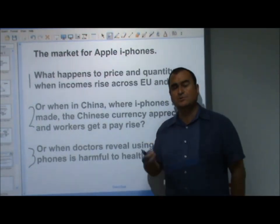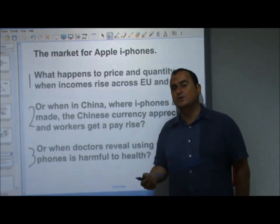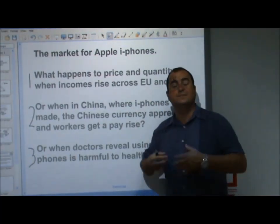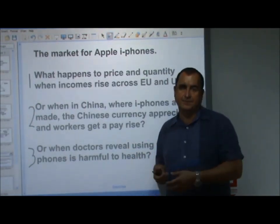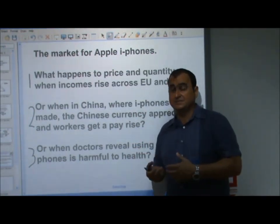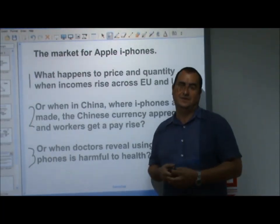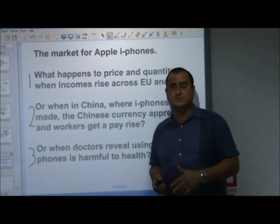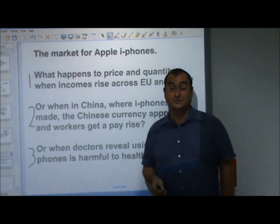First of all, decide: Is that a demand-side event or a supply-side event? Is it affecting the consumers and their willingness to demand? Or is it affecting the suppliers? It's the market for iPhones. Is it affecting the people who might buy an iPhone? Or is it affecting, on the supply side, the producers of the iPhone, Apple? Secondly, after you've decided whether it's demand or supply-side event, you then have to decide, is it increasing or decreasing? I'm going to pause now while you look at that.